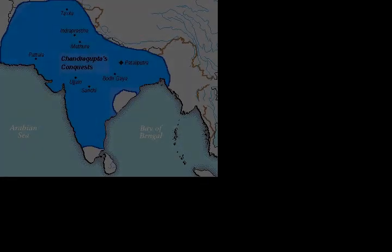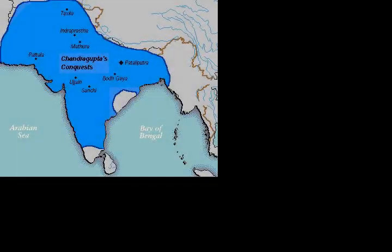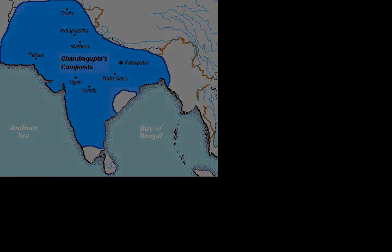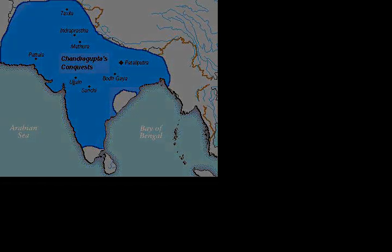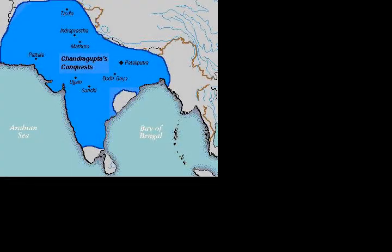Ashoka's response to the Kalinga War is recorded in the Edicts of Ashoka. The Kalinga War prompted Ashoka, already a non-engaged Buddhist, to devote the rest of his life to Ahimsa and to Dharma Vijaya. Following the conquest of Kalinga, Ashoka ended the military expansion of the empire and began an era of more than 40 years of relative peace, harmony, and prosperity.